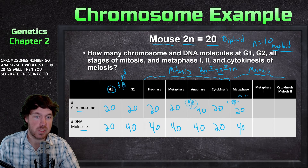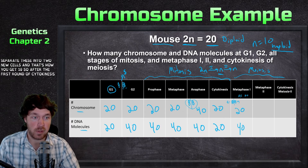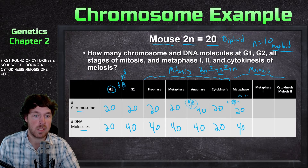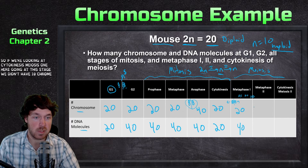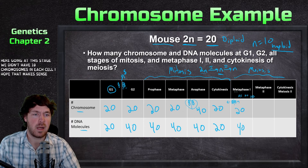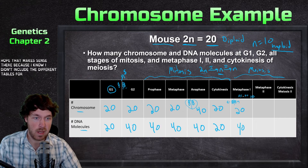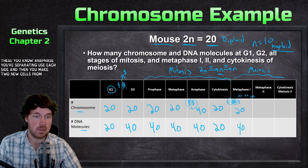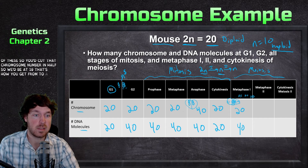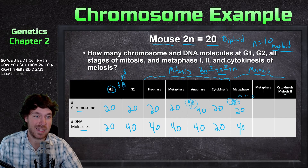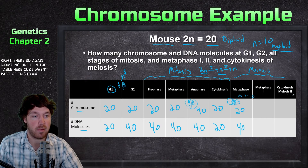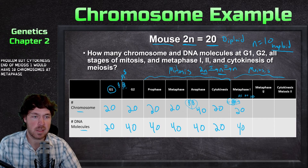After the first round of cytokinesis in meiosis one, each new cell has 10 chromosomes — that's how you get from 2n to n. The cytokinesis end of meiosis one would have 10 chromosomes. Now let's look at metaphase two — this cell then goes through meiosis two, with prophase where the DNA generally stays condensed, then lining up in the middle at metaphase two, where we should have 10 chromosomes.